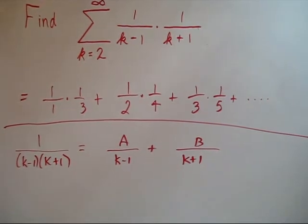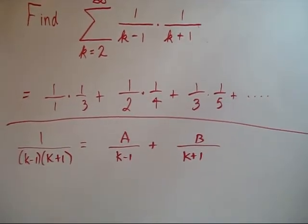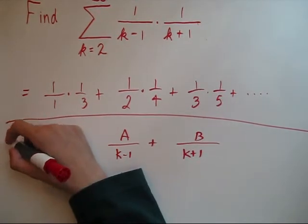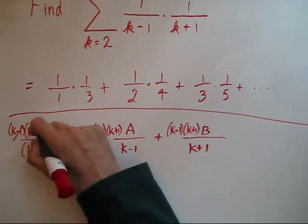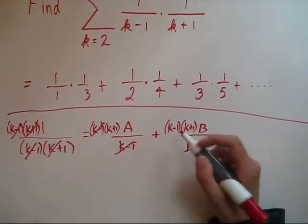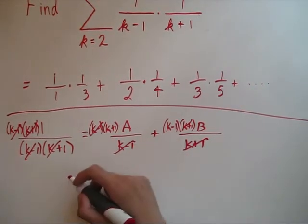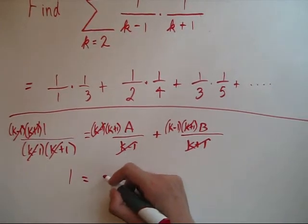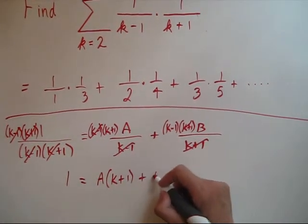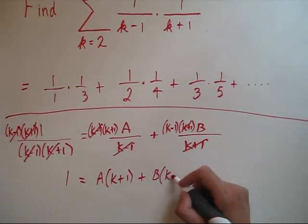Then we wipe out the denominators. So multiply both sides by k minus 1 times k plus 1. Now we can cancel some things. Our denominators, in fact, they're gone. So that we get 1 equals a times k plus 1 plus b times k minus 1.